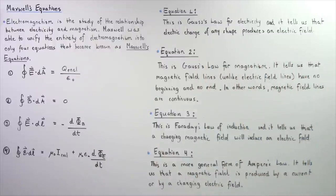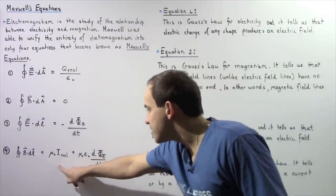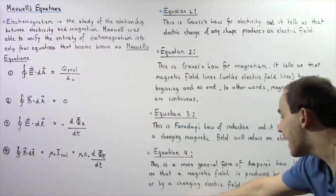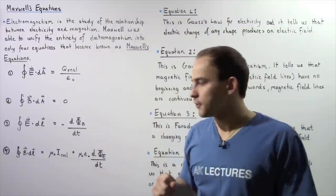It essentially tells us that a magnetic field is produced by an electric current as shown by this term, and is also produced by a changing electric field which is given by the second term.